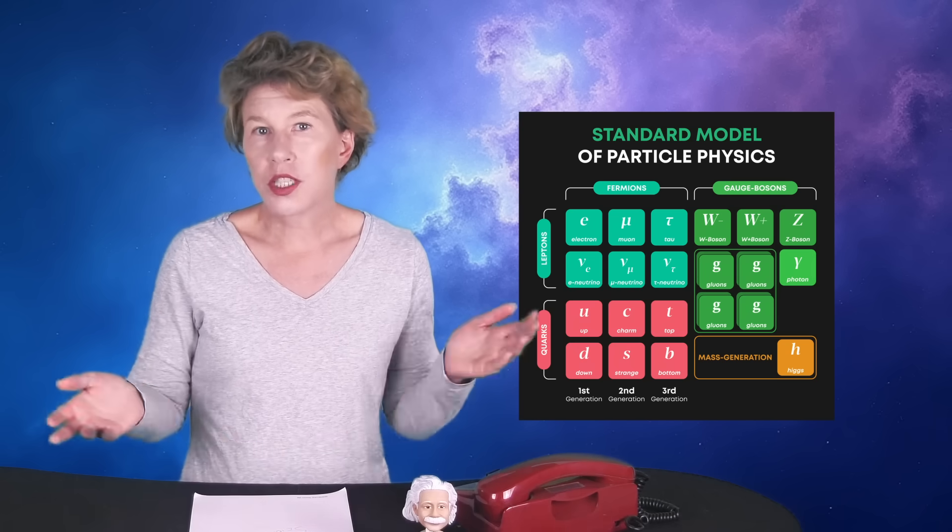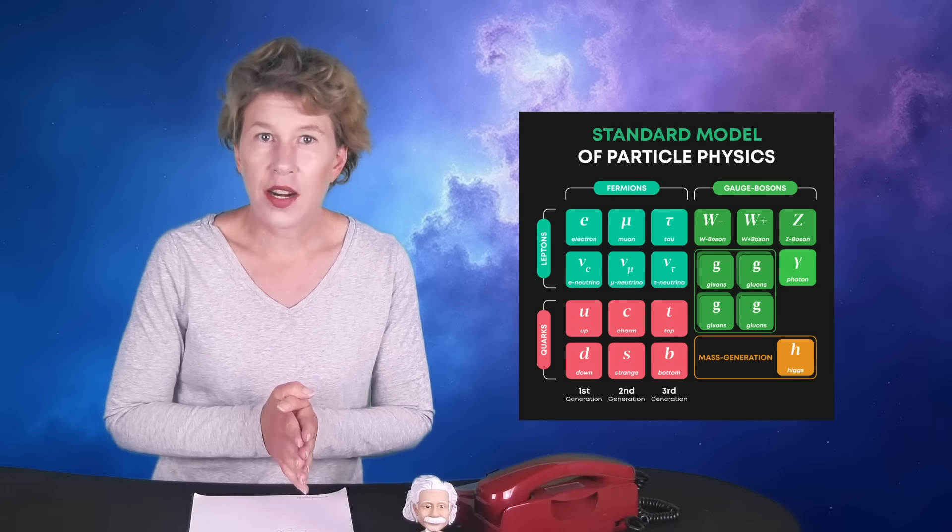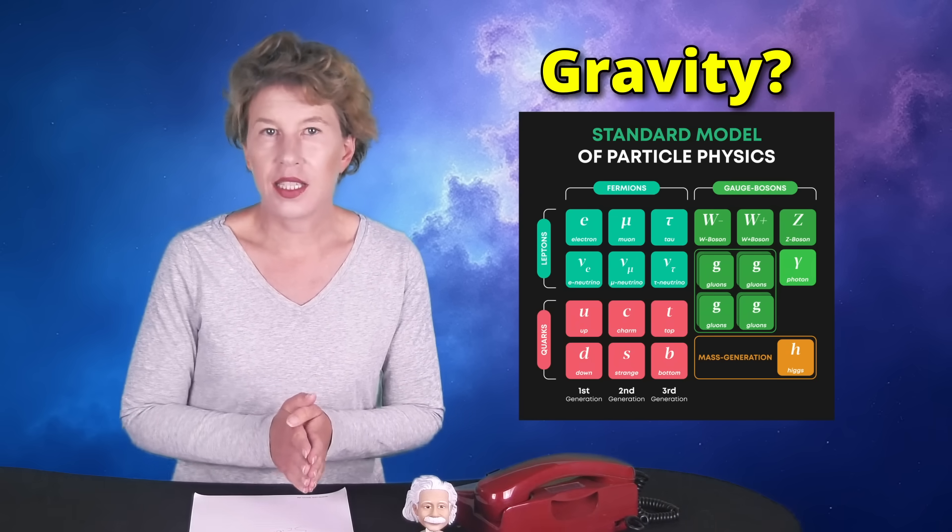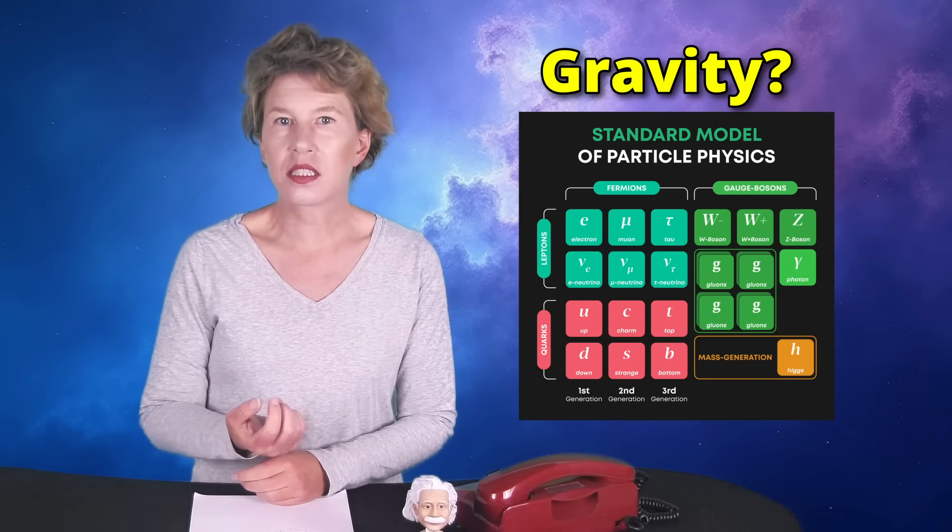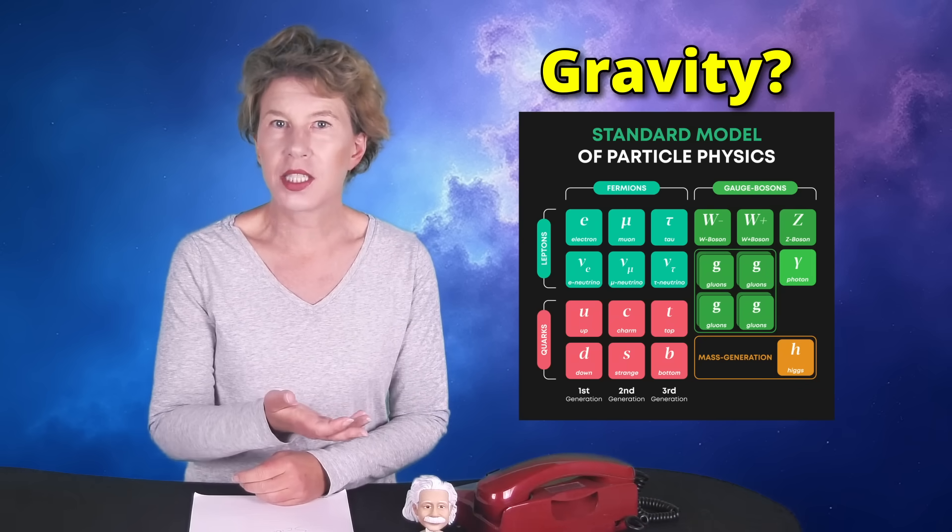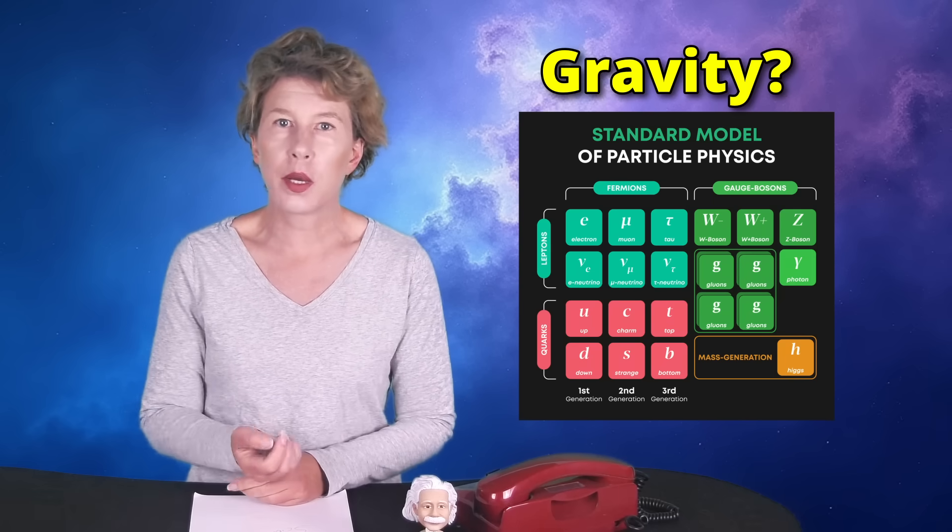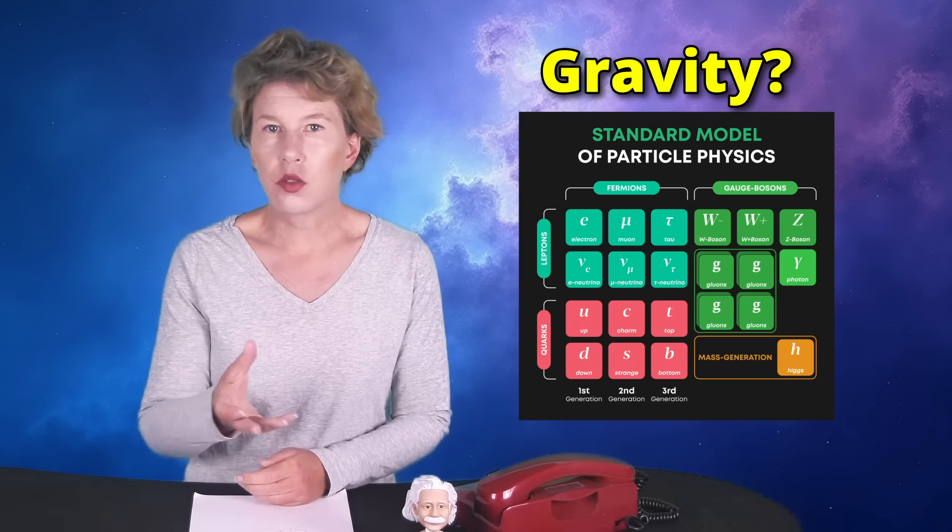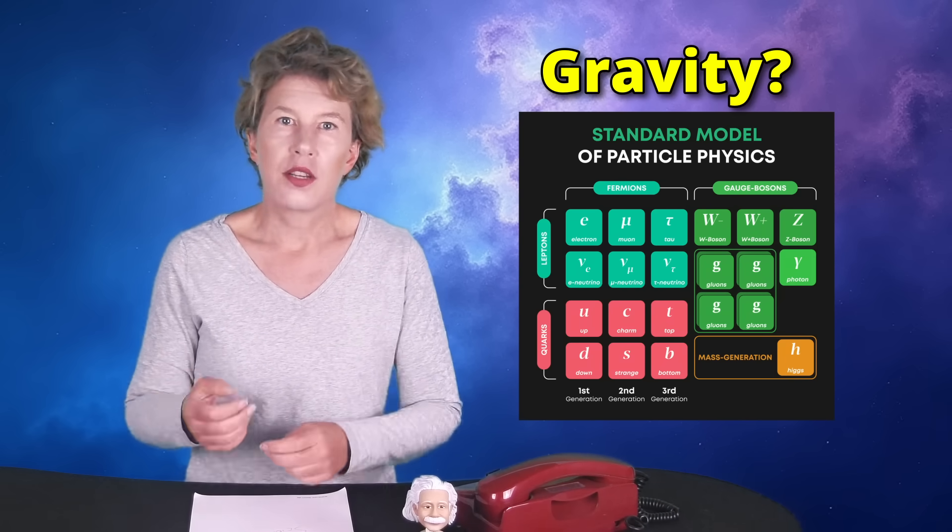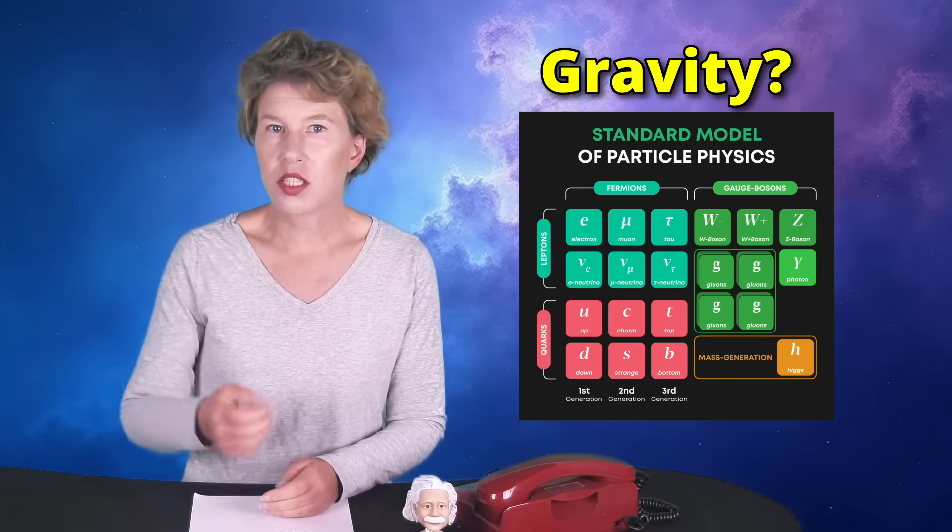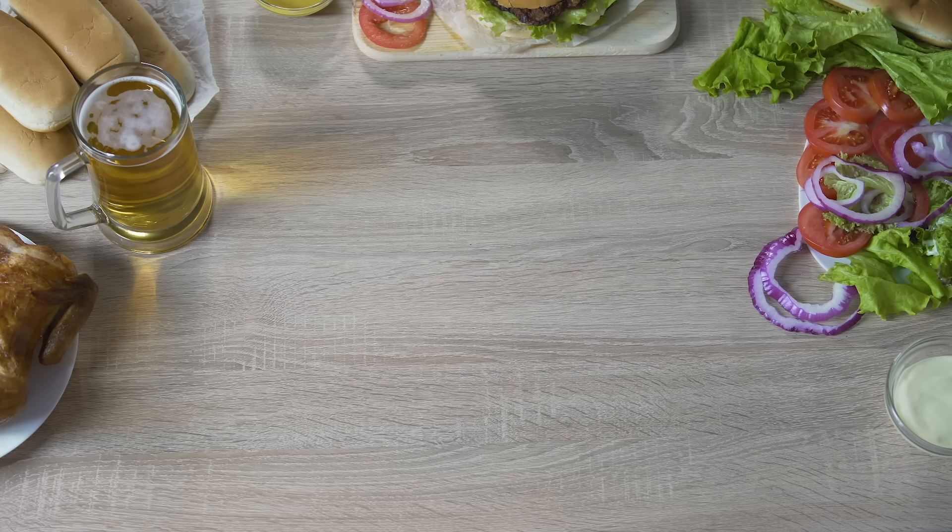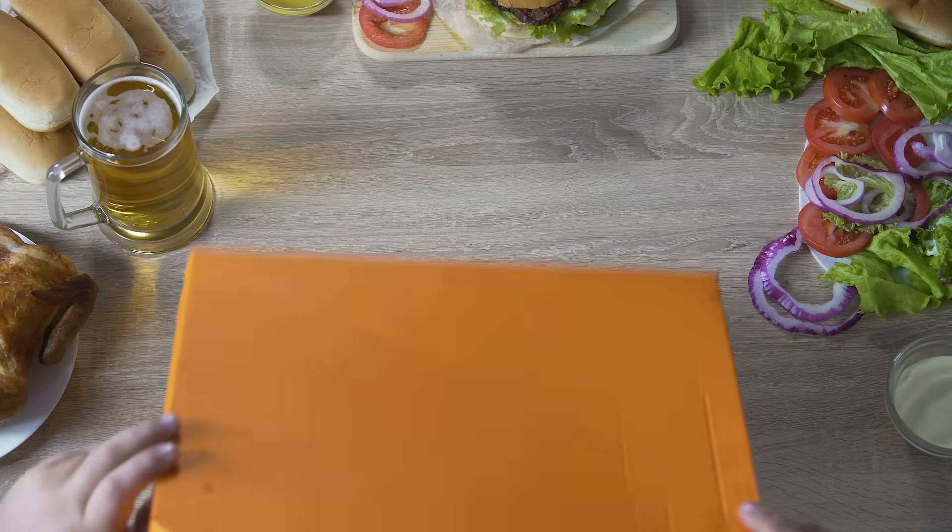Starting with quantum gravity. We have quantum theories for all the known interactions except gravity. That's a problem because we know that particles do have both quantum properties and they're affected by gravity. So we need a theory that combines both. Physicists first realized this problem in the 1930s. So it's been unsolved now for about 90 years. We simply do not have a theory to describe what's going on.